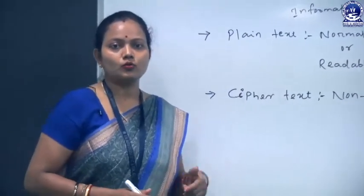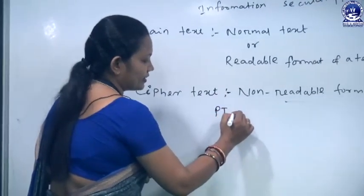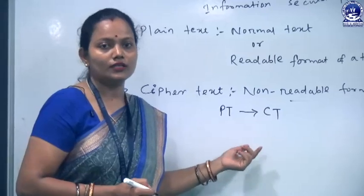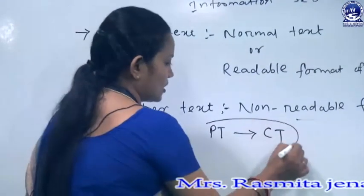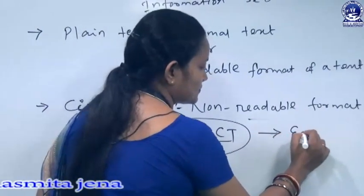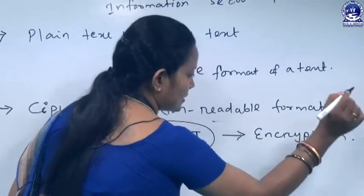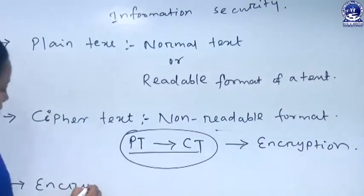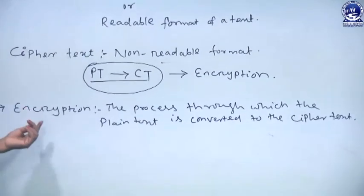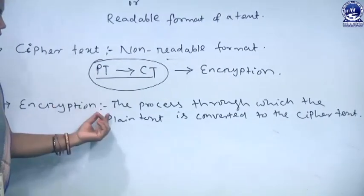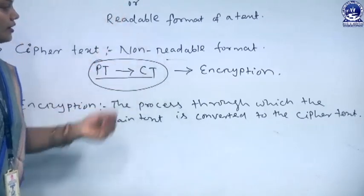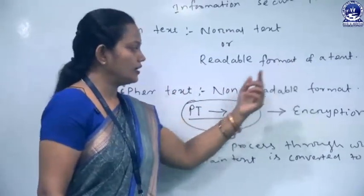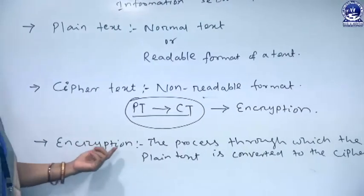When we convert a plain text to its ciphertext, this is one way to provide security to data over the network system. This process — the conversion of plain text to ciphertext — is called encryption. So in the encryption process, we convert the readable format of a text to a non-readable format.